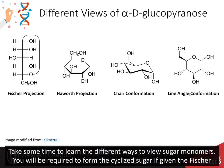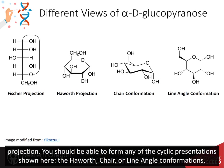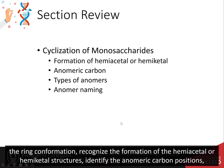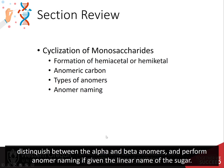You will be required to form the cyclized sugar if given the Fischer projection. You should be able to form any of the cyclic presentations shown here — the Haworth, chair, or line angle conformations. Overall, in this section you learned about the cyclization of monosaccharides. You should be able to cyclize a linear sugar into the ring conformation, recognize the formation of the hemiacetal or hemiketal structures, identify the anomeric carbon positions, distinguish between the alpha and beta anomers, and perform anomer naming if given the linear name of the sugar.